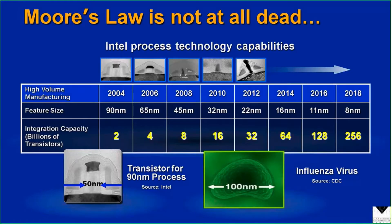How does this involve you as programmers? How is this related to OpenACC? It's not that Moore's Law is dead. Moore's Law is an observation that Gordon Moore made back in the 60s that transistor densities — the number of transistors that we can cram onto integrated circuits, which at that point in time were a new invention — were doubling about every 18 months or so.